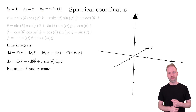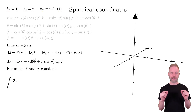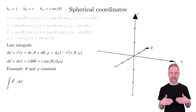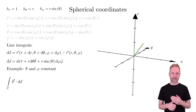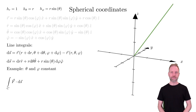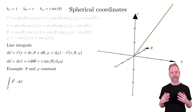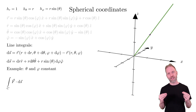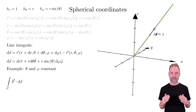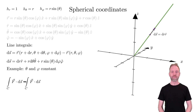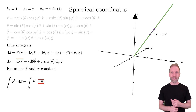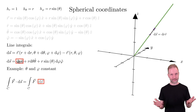As an example, assume that theta and phi are constant, and we are integrating a vector field in the radial direction. This curve would be a straight line from the origin. We can visualize DS as a small step in the radial direction, DR r-hat. This means that we insert DR r-hat as DS.